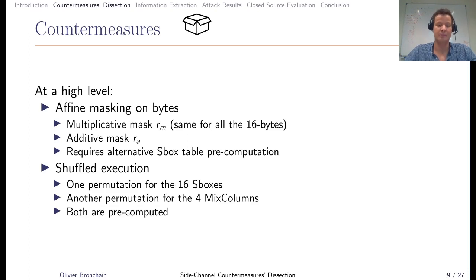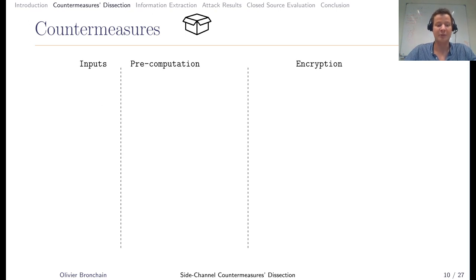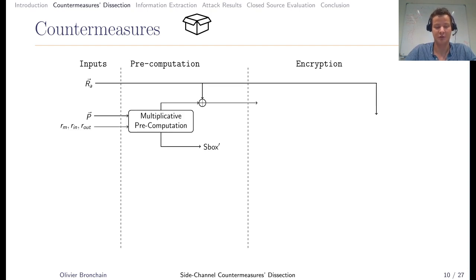If I put that in a diagram, there are three steps: inputs, precomputation, and encryption. As inputs, you have some additive mask, plaintext, and multiplicative masks. You do the precomputation of the alternative S-Box. Then during encryption, you can share everything and are left with two branches, left branch and right branch that we detail next in the talk. These two branches go into add round key, then addition, then S-Box computation, then other addition, and finally shift rows and mix columns.